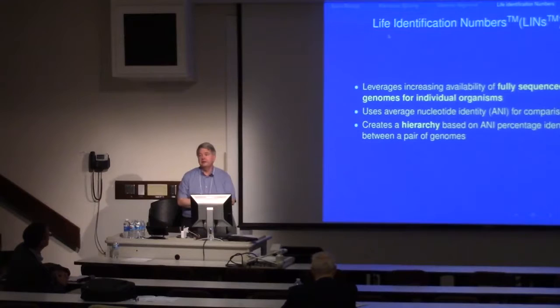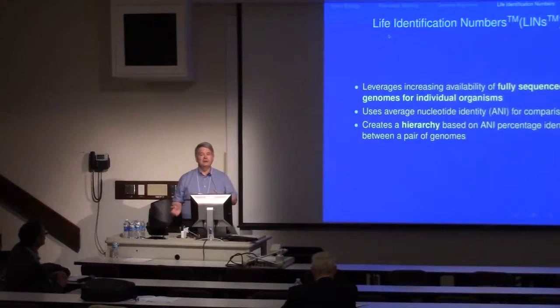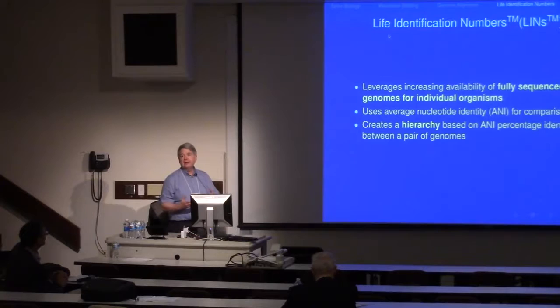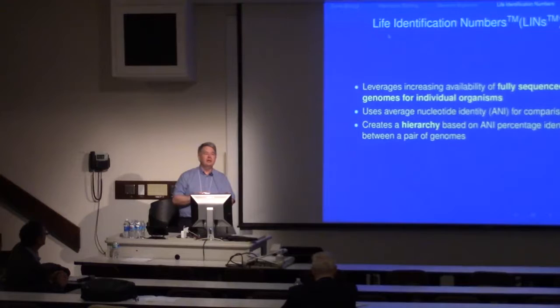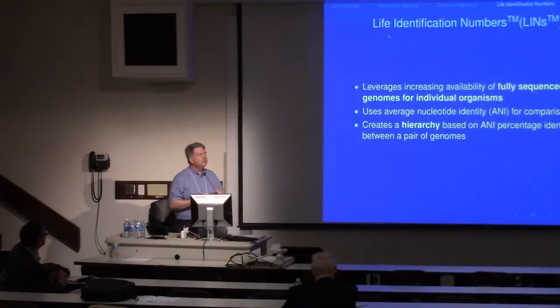Genome sequencing is becoming cheaper and faster. We can get genomes of bacteria, viruses, plants, and animals. When we have those genomes, we can compare them using average nucleotide identity to determine which genomes are close to others. It's not really phylogeny — it's just a way of finding what genomes are close to other genomes.